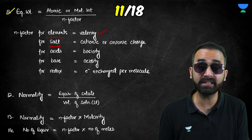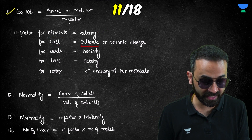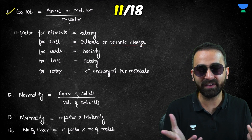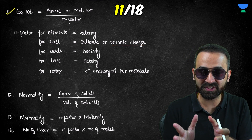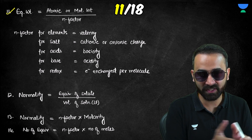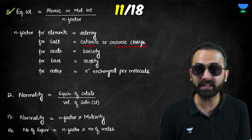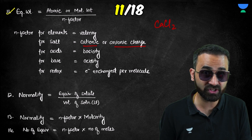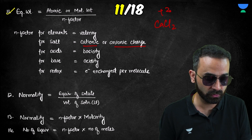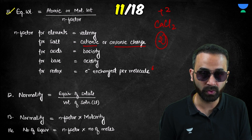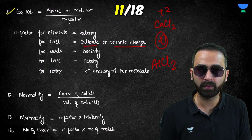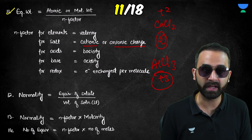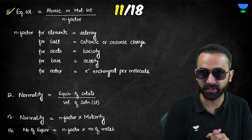For a salt, the n-factor is either the cationic charge or the anionic charge, since in a salt the total positive charge equals the total negative charge. For example, CaCl₂ has a cationic charge of +2, so its n-factor is 2. For AlCl₃, the cationic charge is +3, so the n-factor is 3.